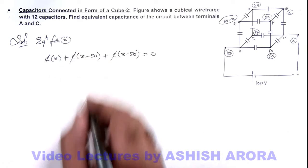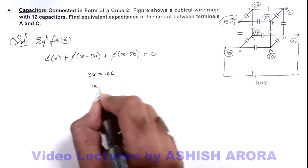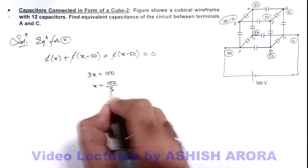Here C gets cancelled out. Solving, we are getting 3x is 100, so the value of x is 100 by 3 volt.